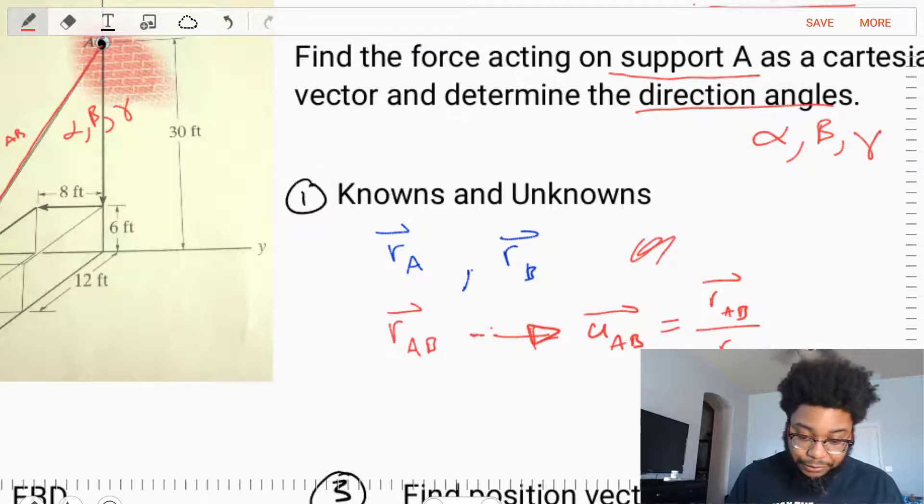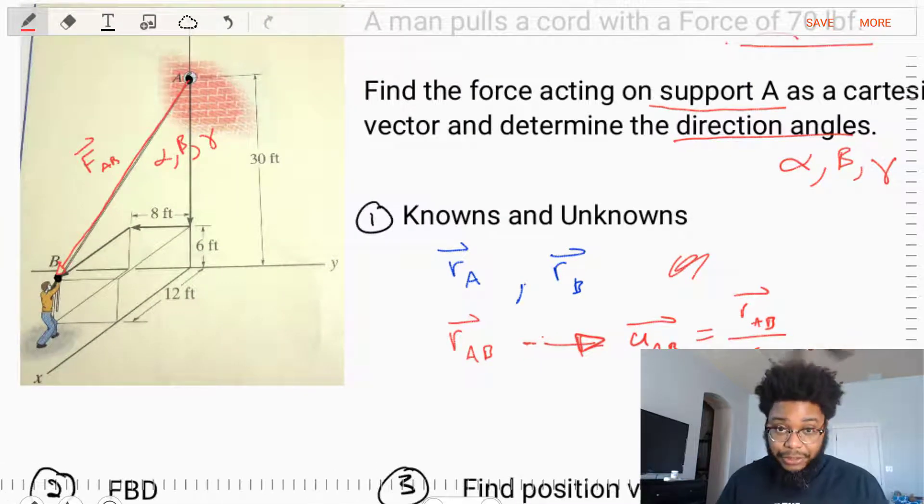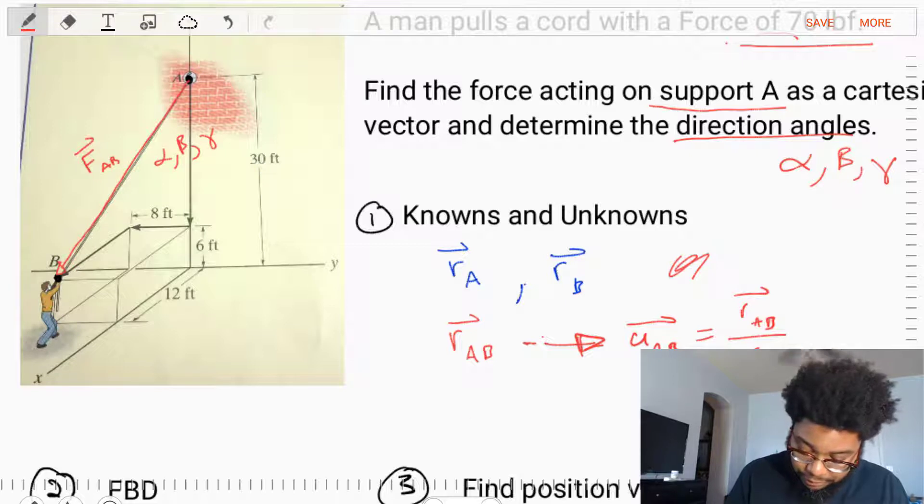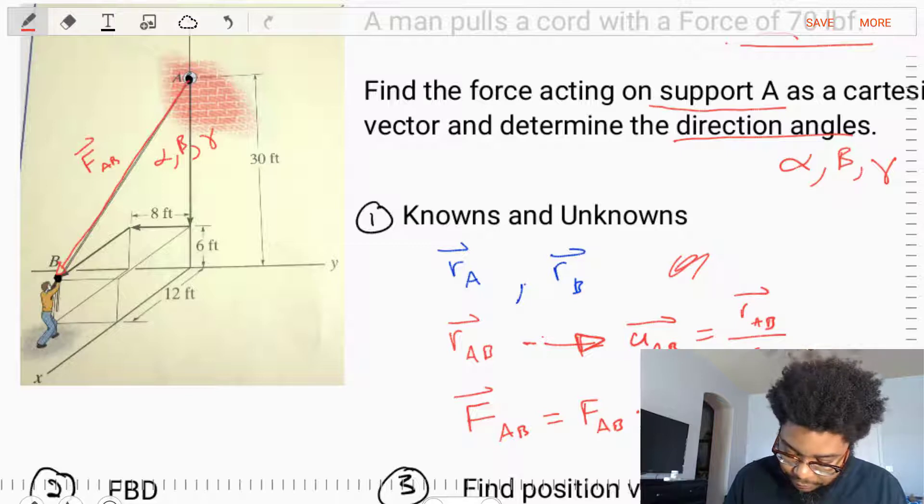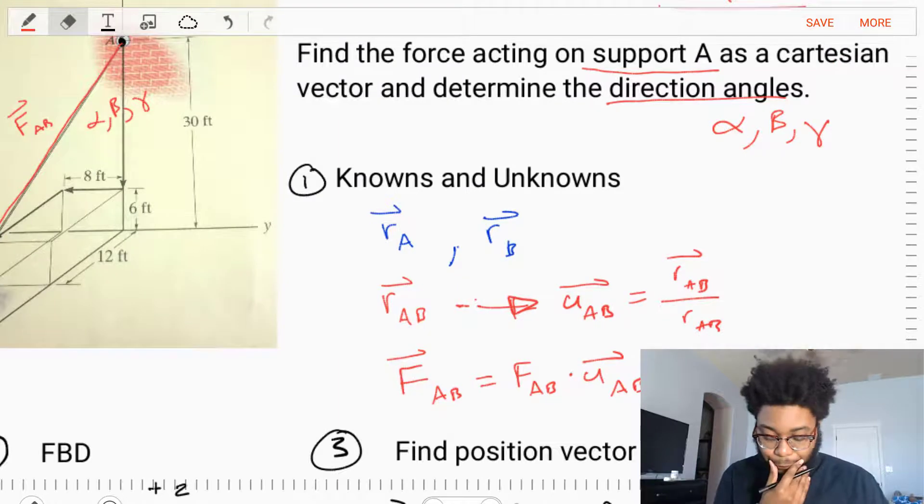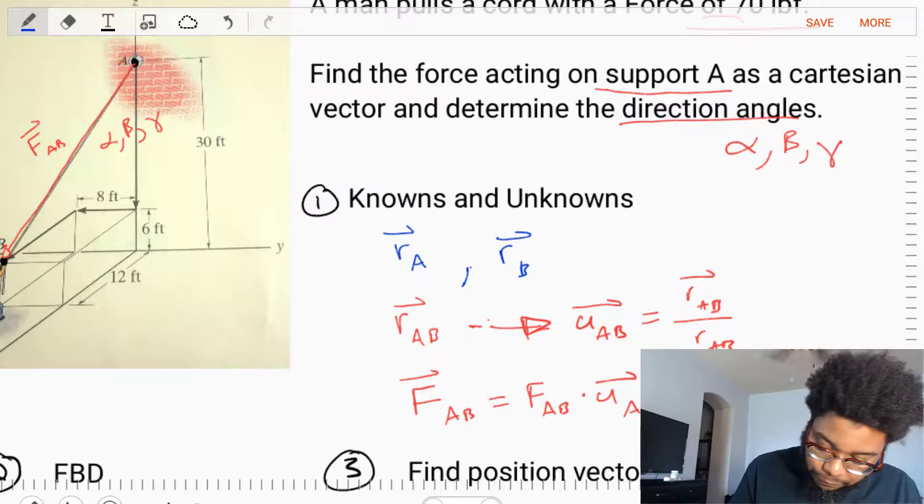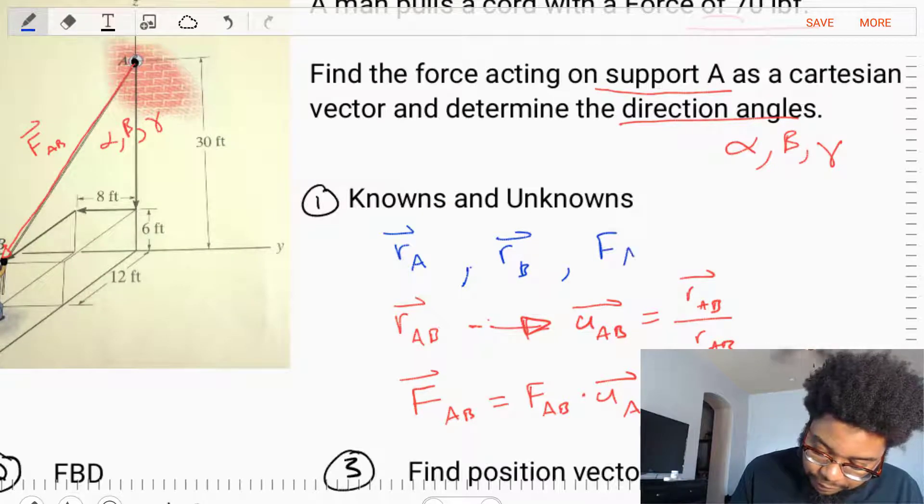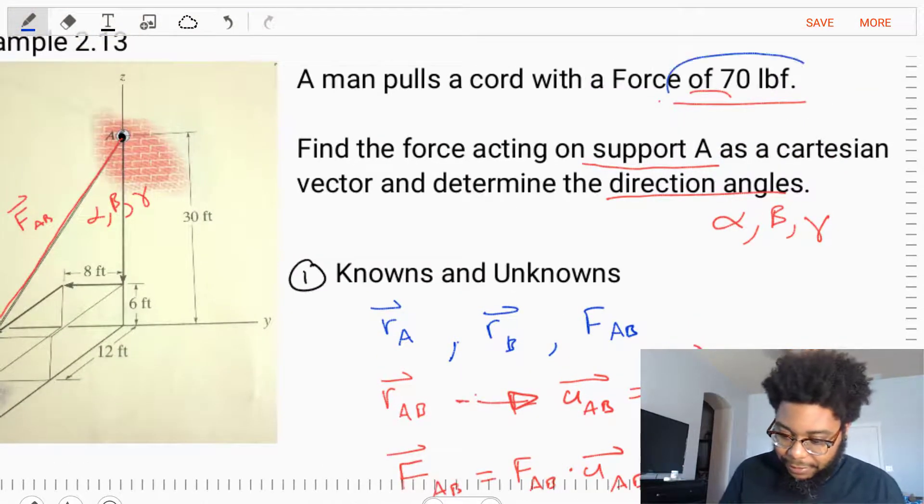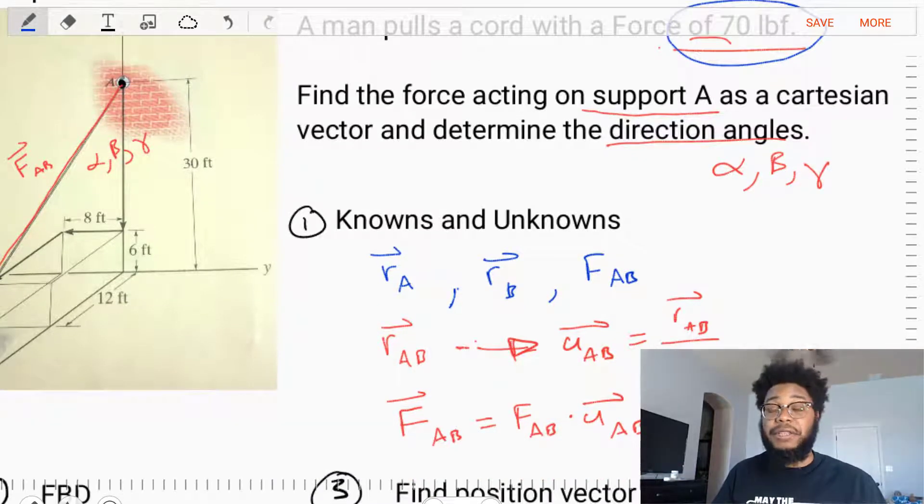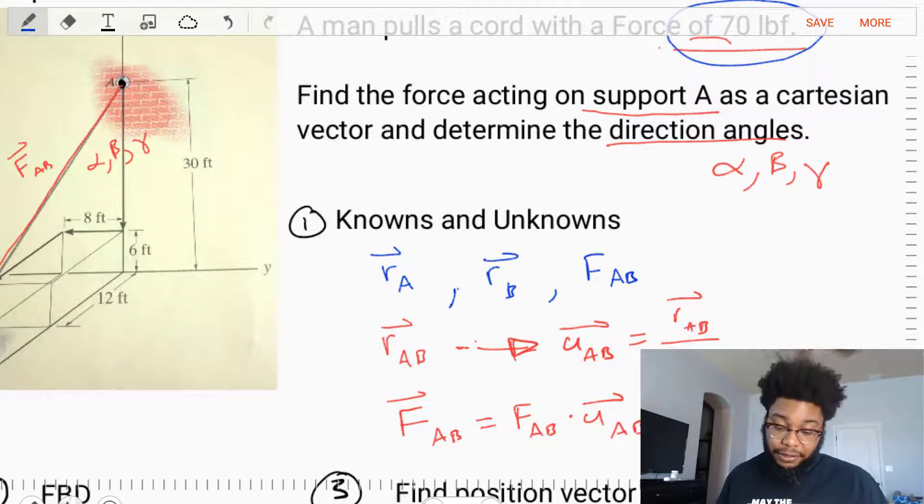With that direction, since that direction is the same direction as our force vector, we'll be able to find our force vector. FAB is equal to the magnitude of the force vector times the unit direction UAB. So for this problem, our knowns are the positions RA and RB, and we're also given FAB. The magnitude is 70 pounds.